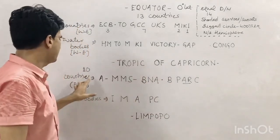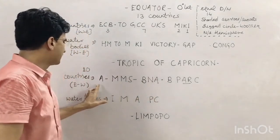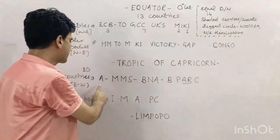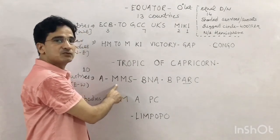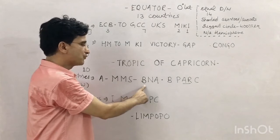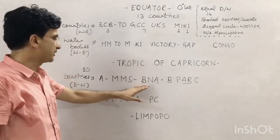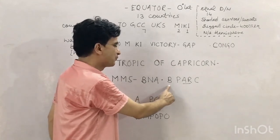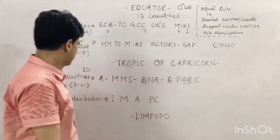Now the Tropic of Capricorn at 23.5 degrees south. It passes through 10 countries. The trick, from east to west, is 'A MMS bana B per C.' A for Australia, first M for Madagascar, second M for Mozambique — Madagascar comes eastward because its second letter is A while Mozambique's second letter is O, and A comes before O. Then South Africa, Botswana, and Namibia — the five African countries through which Tropic of Capricorn passes.